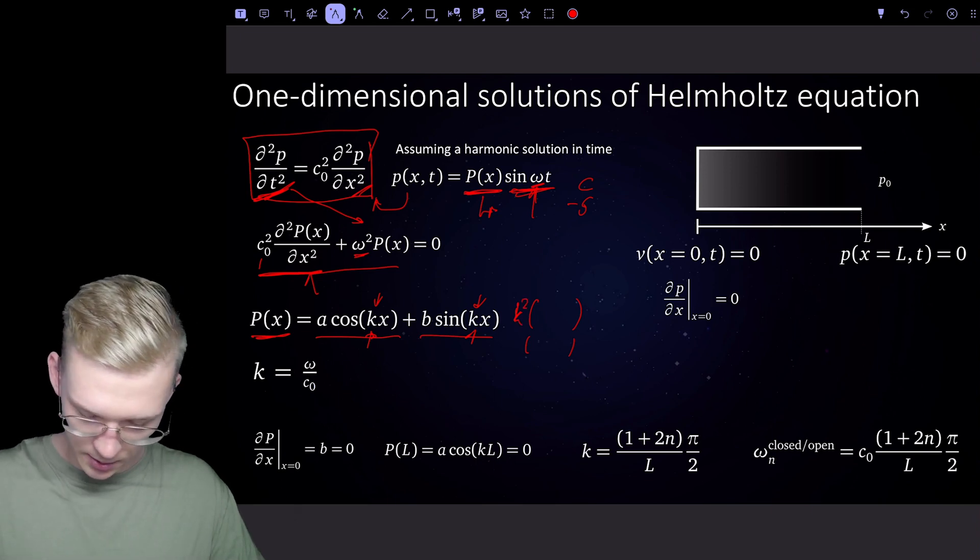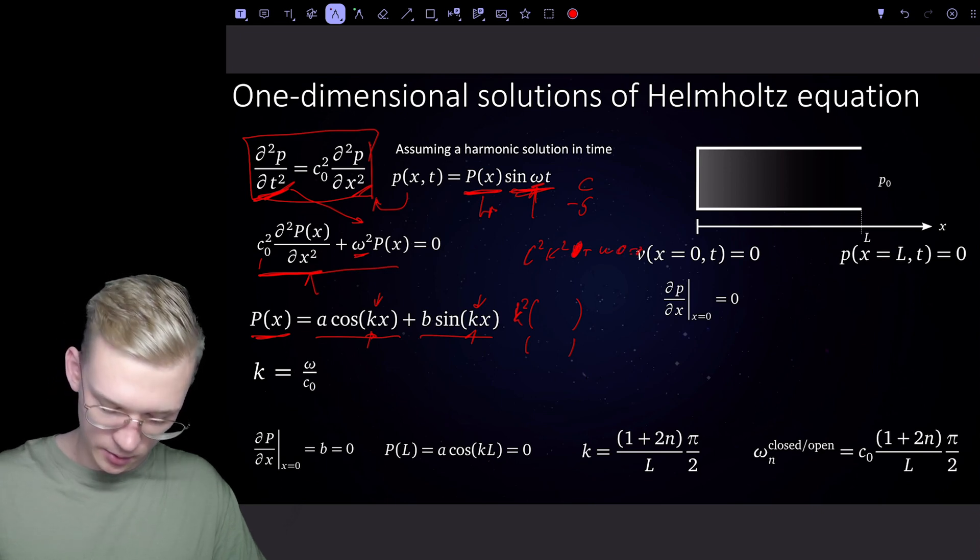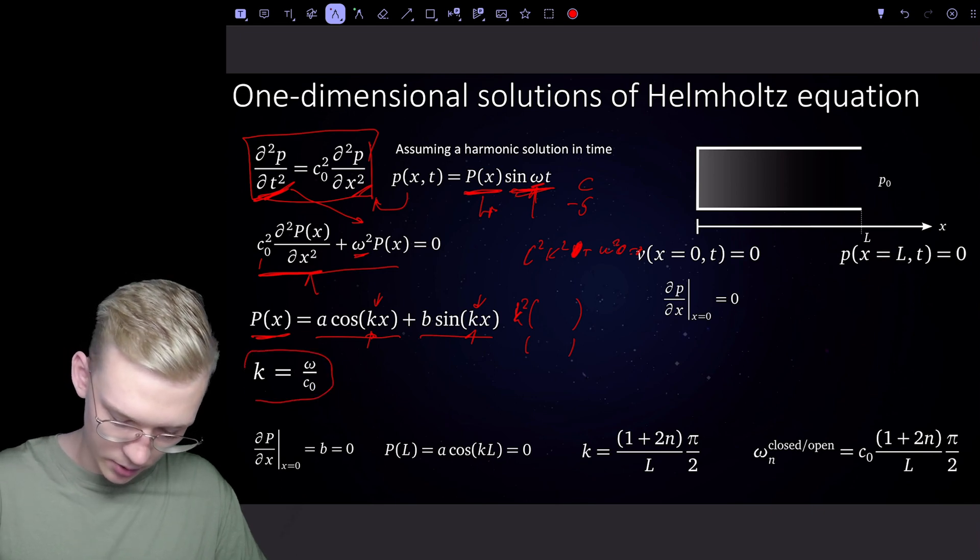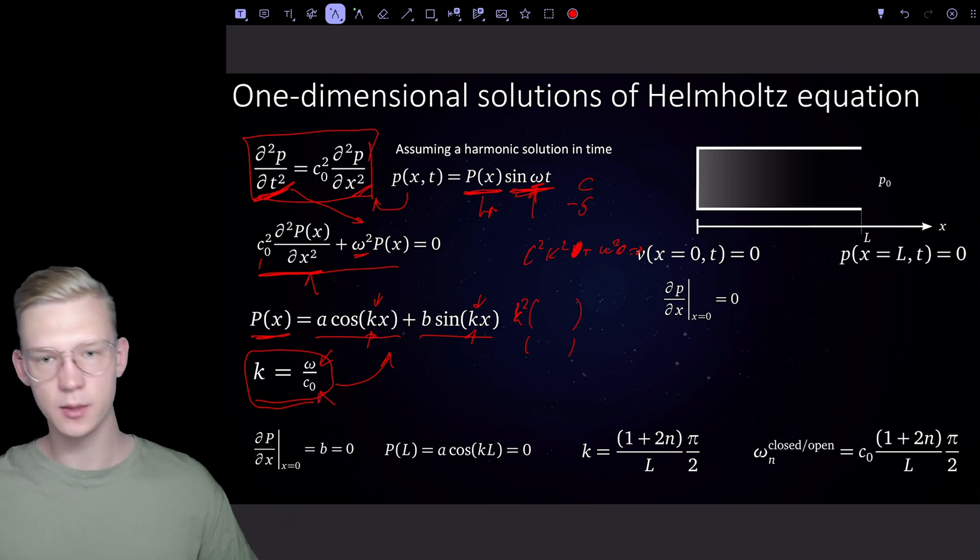So we will see that c squared k squared plus omega squared times the functions is equal to zero. Now we know that our k in that function is our eigenfrequency divided by the speed of sound.